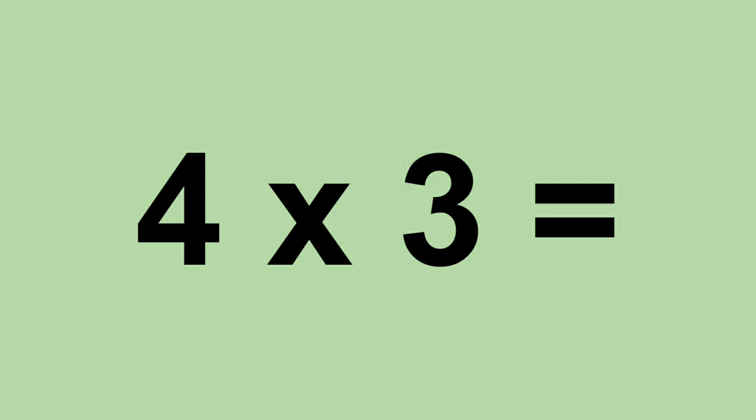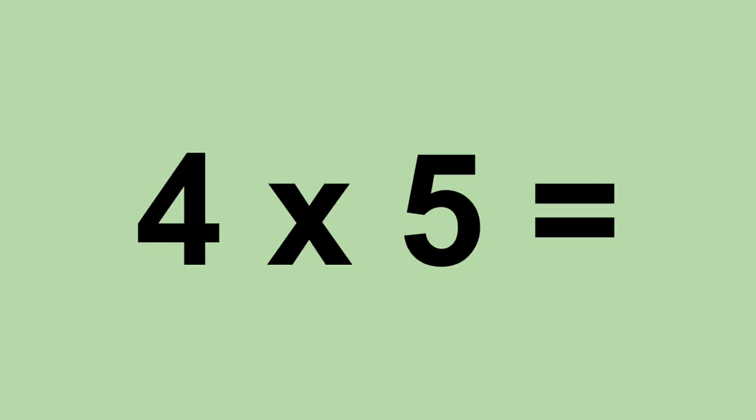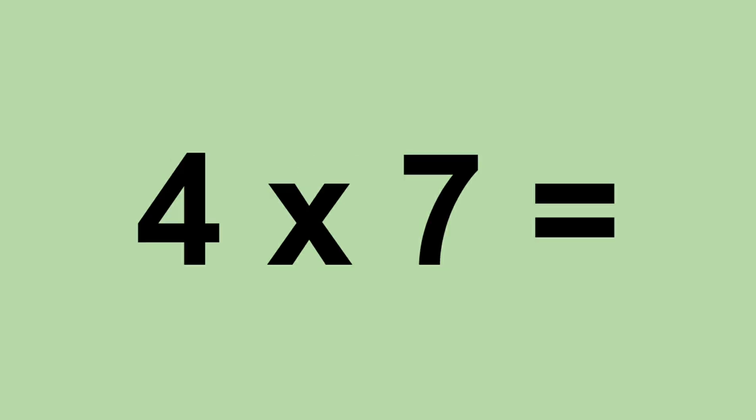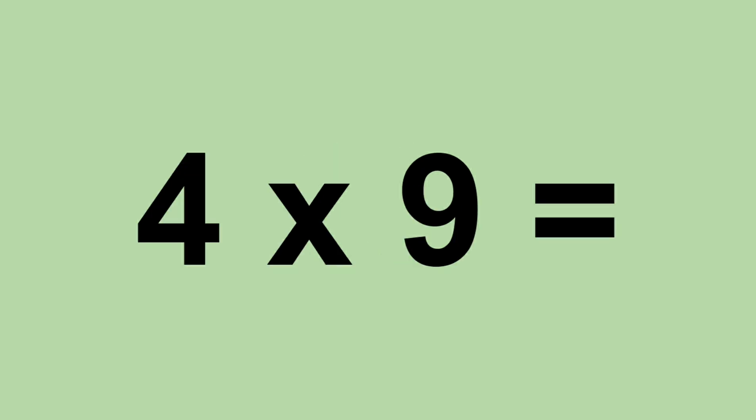Four times three equals twelve. Four times four equals sixteen. Four times five equals twenty. Four times six equals twenty-four. Four times seven equals twenty-eight. Four times eight equals thirty-two. Four times nine equals thirty-six.